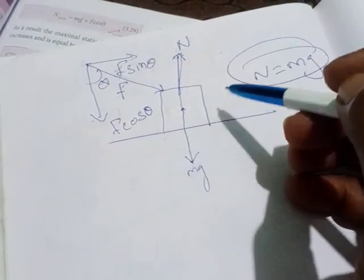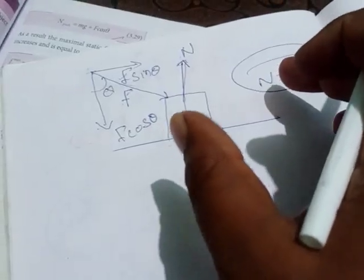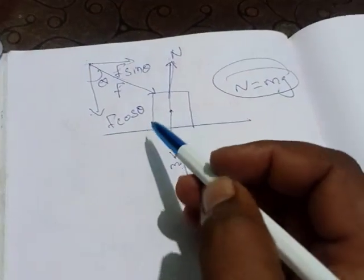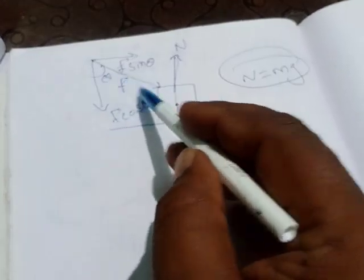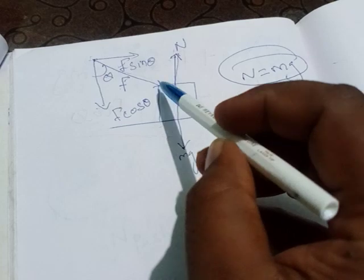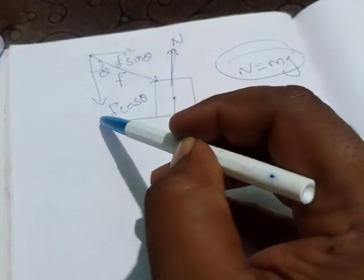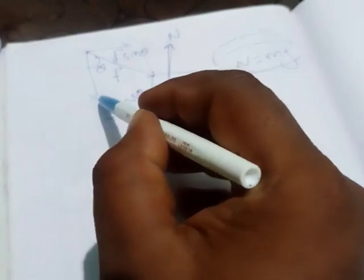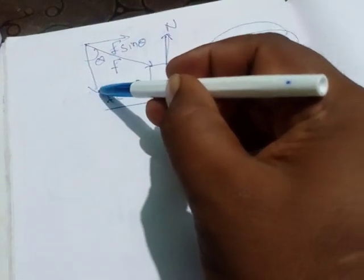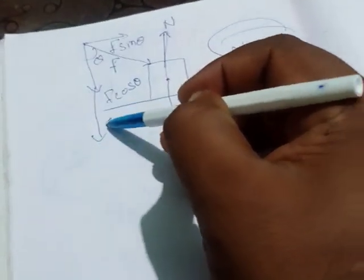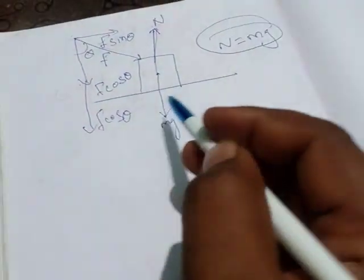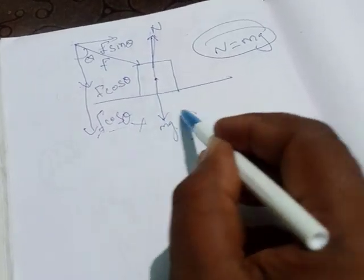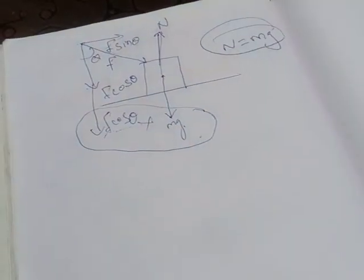Now draw the free body diagram. When we apply this force at angle theta on this object, the force splits. Downward, F cos theta is acting along with Mg. So two forces are acting downward: F cos theta and Mg.